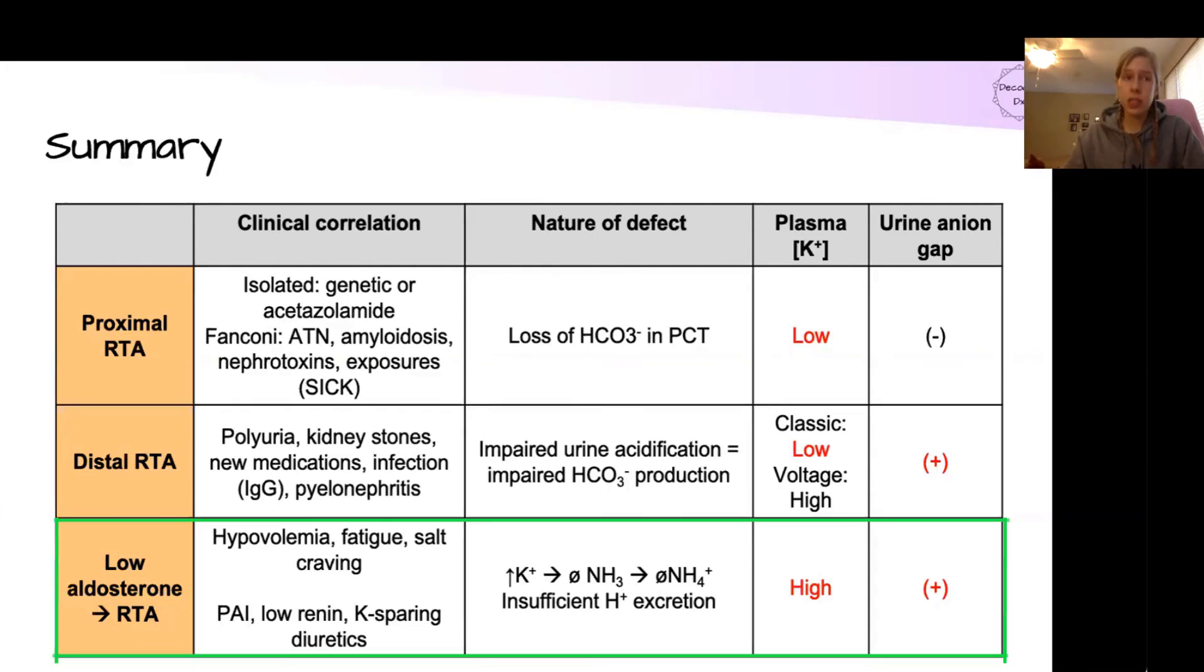In a low aldosterone state, which is also known as a type 4 RTA, you have hyperkalemia, which is going to impair the production and transport of ammonia and ammonium in the lemon, which leads to an inefficient acid secretion, because we need that ammonium to allow the concentration gradient of free hydrogen to keep the hydrogen pump continuing to pump out acid. In this state, you're going to have high potassium.